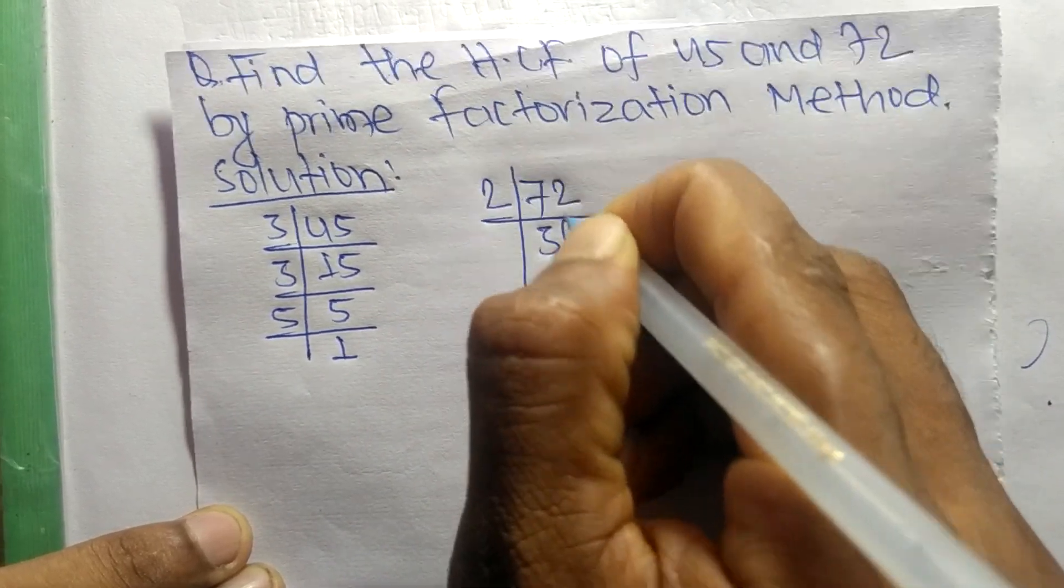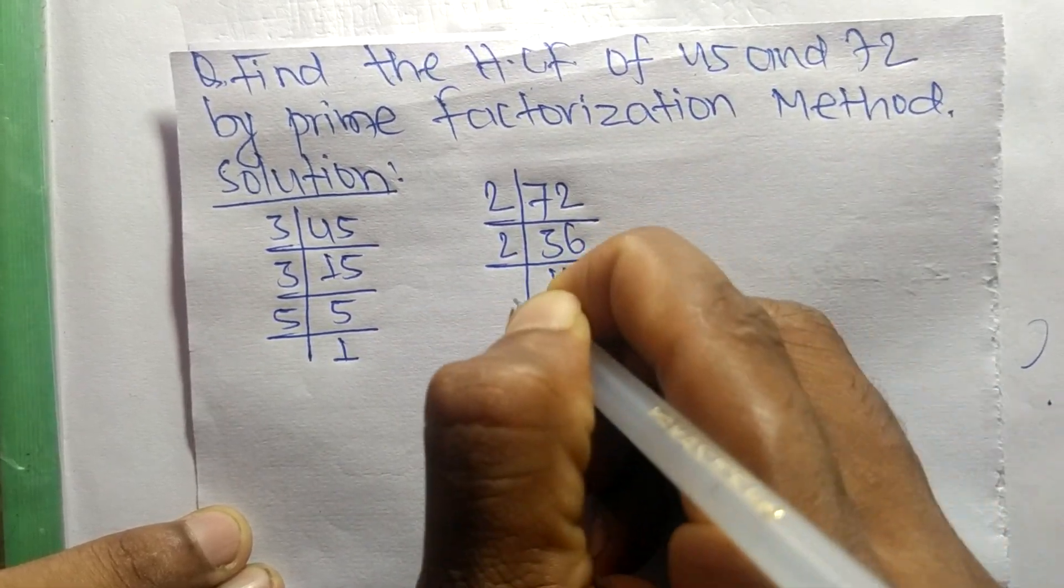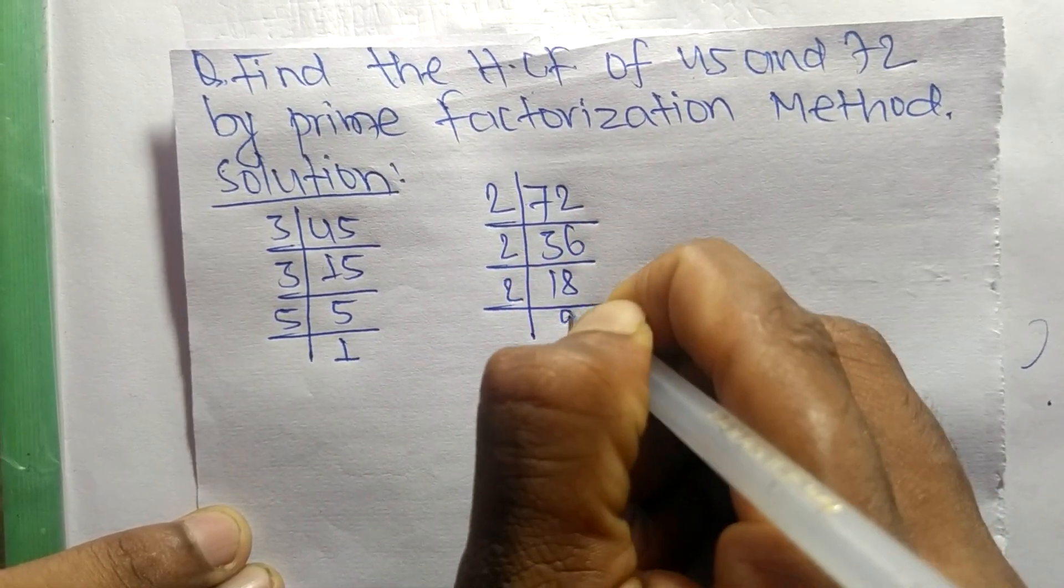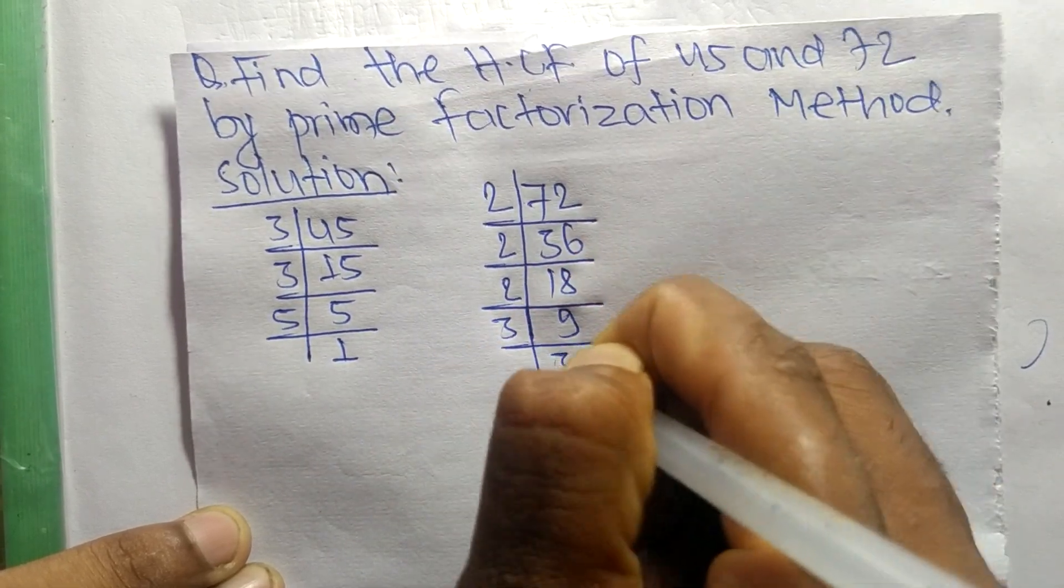It is 2 times 36 equals 72, 2 times 18 equals 36, 2 times 9 equals 18, 3 times 3 equals 9, and 3 times 1 equals 3.